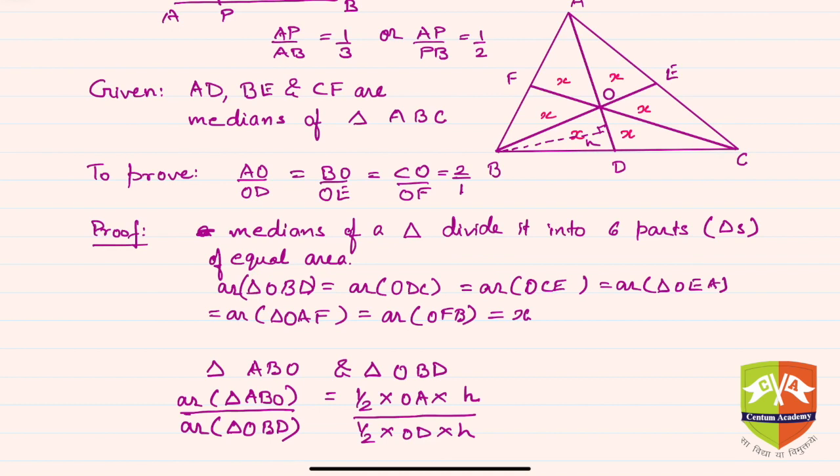Can I do that? Yes I can. So if you see, the left hand side of this relationship, area of ABO is nothing but x plus x. If you see closely, area of ABO is x plus x.